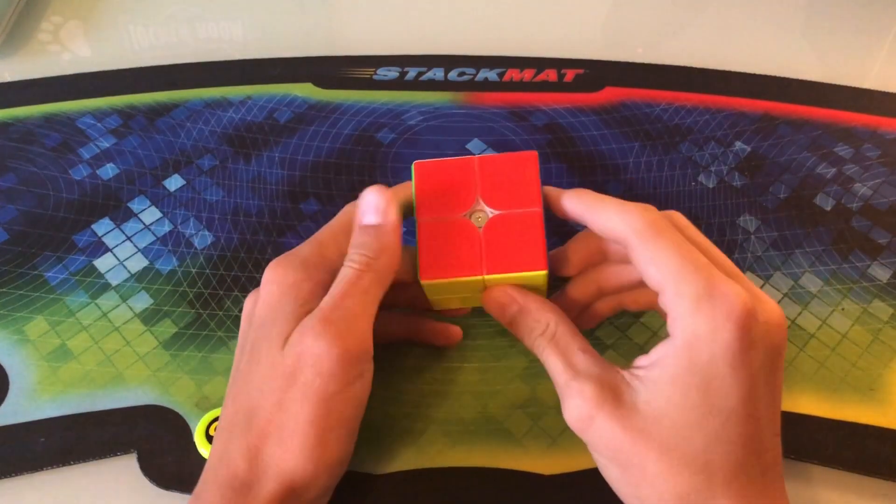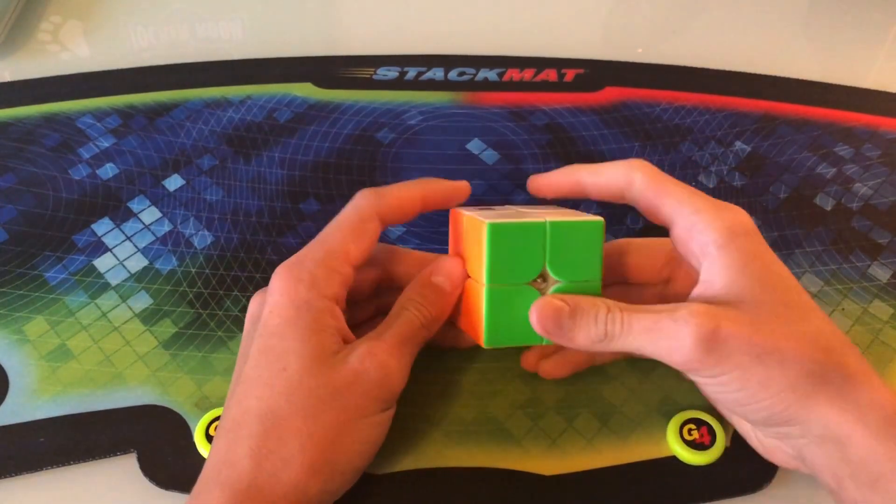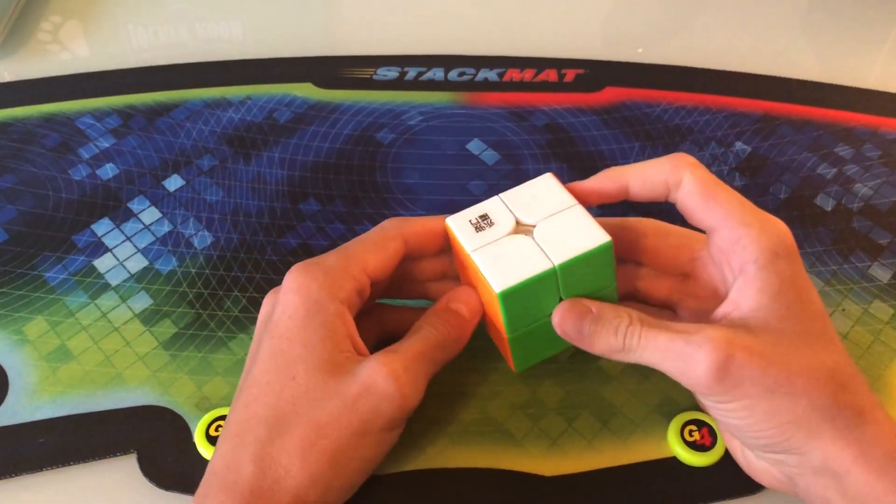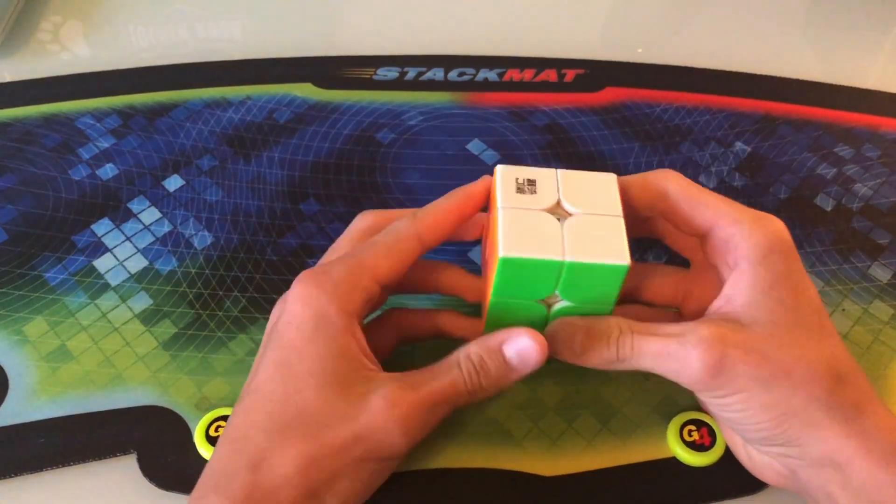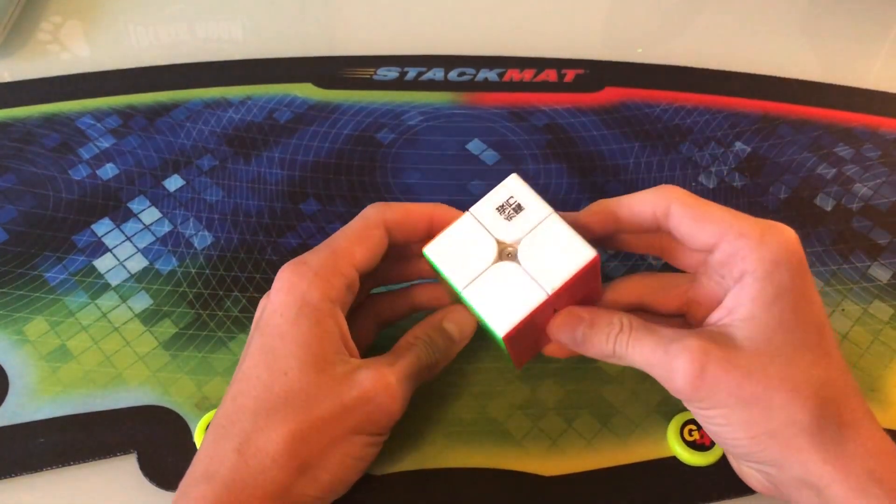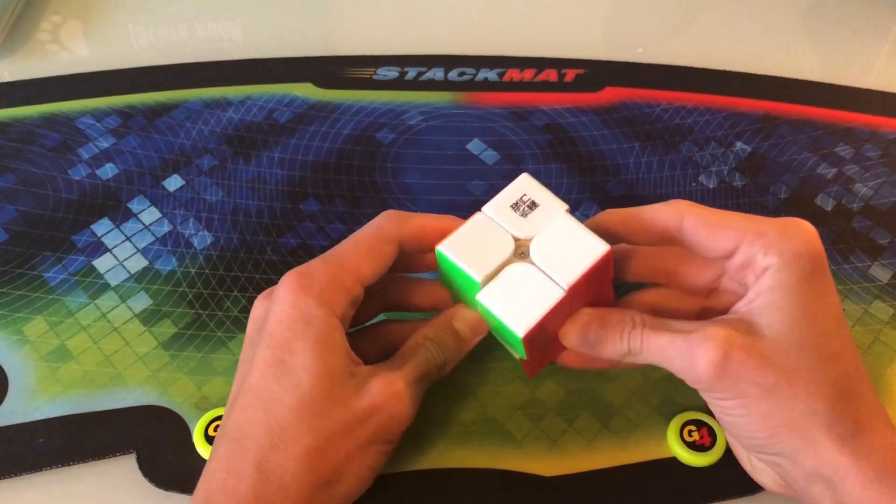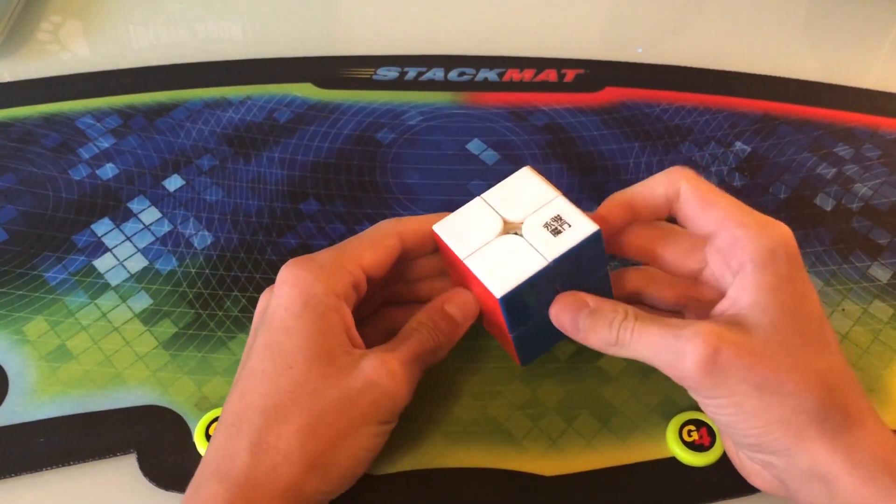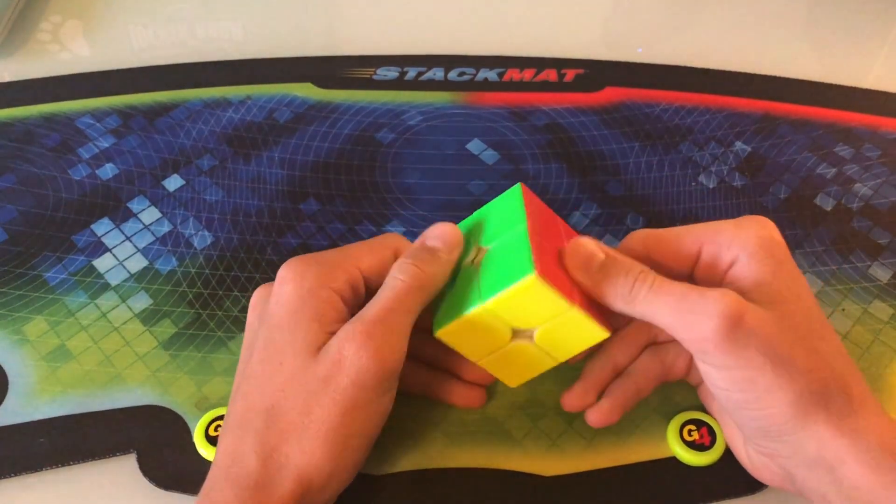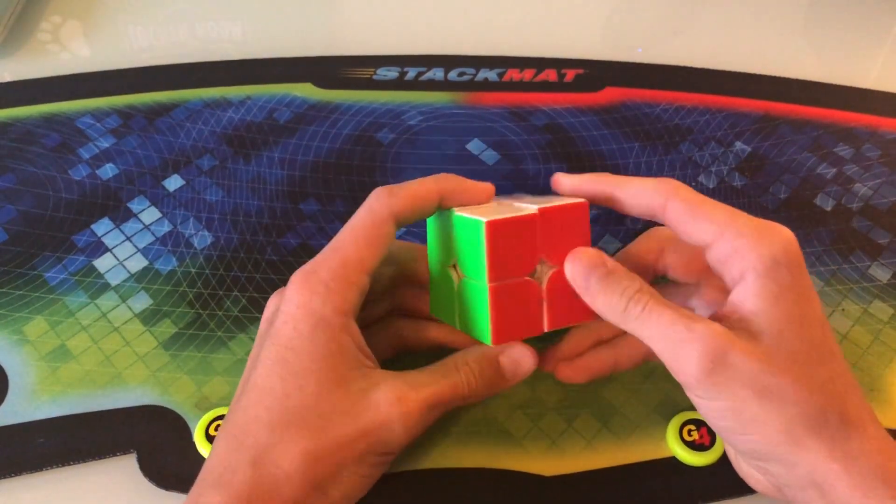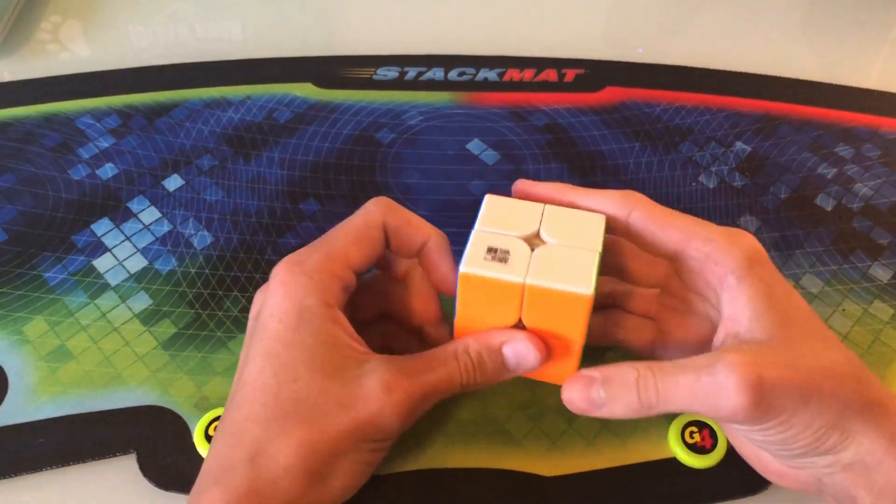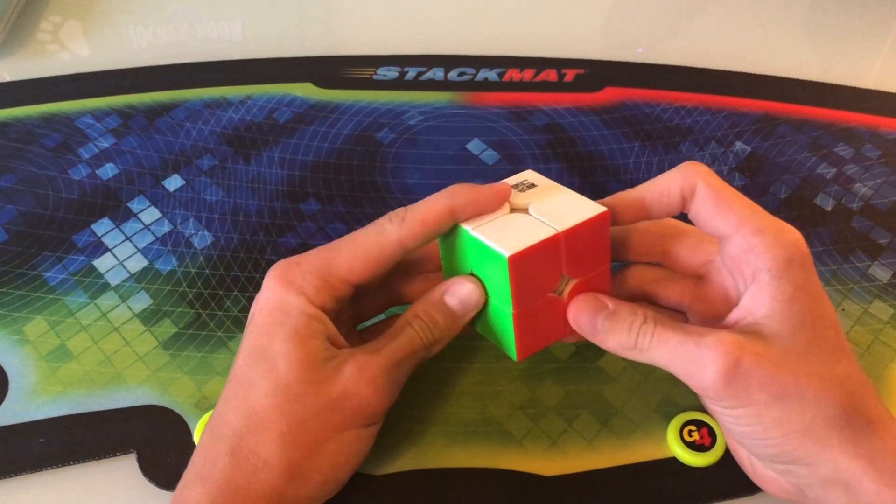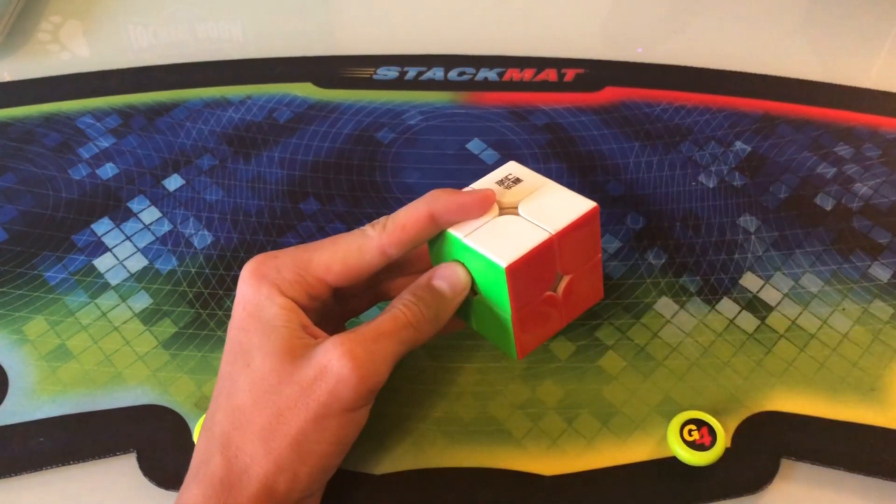This cube is one of the cubes from the YJ budget line. There's also the 3x3 version, the 4x4, 5x5, etc. But the cube that we have here is the Yupo 2x2, and specifically version 2. There was a version 1, I guess you could call it, but at least in my opinion, that cube was mediocre at best. So when they released the version 2, and it was magnetic, I was definitely intrigued.